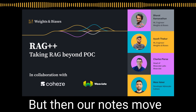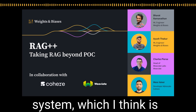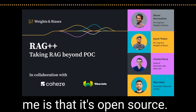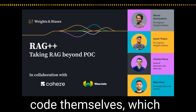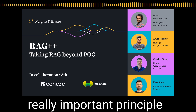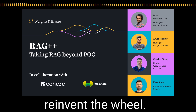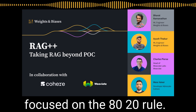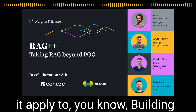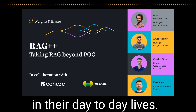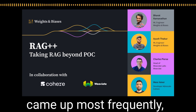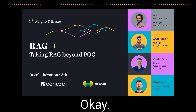Our notes move into a real-world RAG system called WANBOT, which is open source — so anybody listening can go look at the code themselves. That transparency is so key. The team behind WANBOT really focused on the 80-20 rule. By focusing on the 20% of user needs that came up most frequently, they could solve 80% of the problems. It's about getting the most bang for your buck and focusing your efforts in the places that are really going to move the needle.